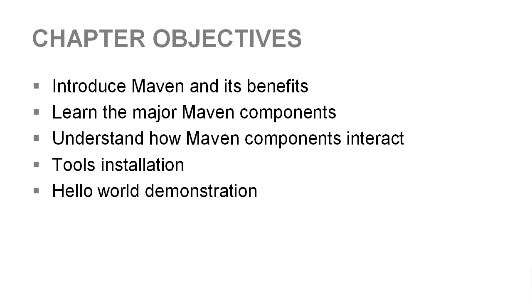So let's talk about what we're going to cover in this chapter. As you would expect, this is an introductory chapter to Maven, so we're going to be looking at some high-level concepts surrounding the tool. The first objective for our chapter is to introduce the Maven tool and discuss some of its benefits — what Maven can do for you and why you would want to use it — hopefully giving you a good overview of whether Maven is right for you and your project.